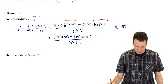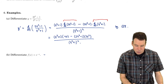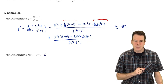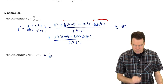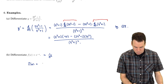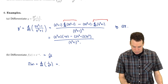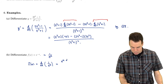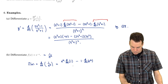Now let's consider e to the negative x. We know how to differentiate e to the x, but this is e to the negative x. How do we differentiate that? Well, we can look at it as a quotient — it is 1 over e to the x. To find its derivative we can use the quotient rule: it's the derivative of the top function times the bottom, minus the top function times the derivative of the bottom, all over the bottom squared.